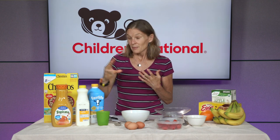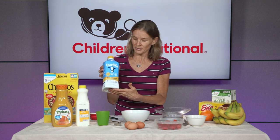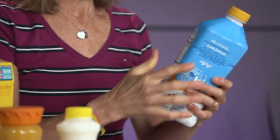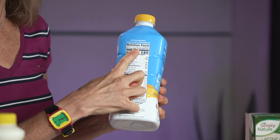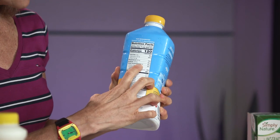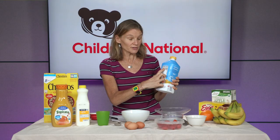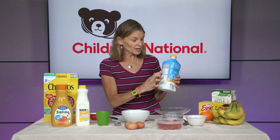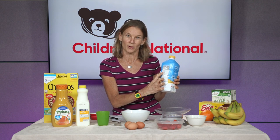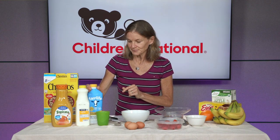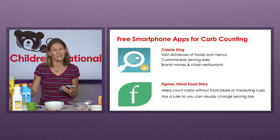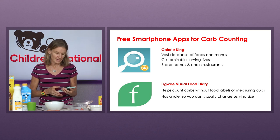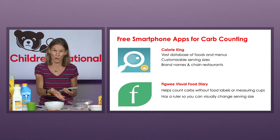There are three ways to figure out carbs. First, many foods have food labels. This milk — a different brand called Fairlife — has a label with two things to keep an eye on: the serving size, which is one cup, and the total carbohydrates, which is six grams. So if I have one cup of this milk, I'll add six grams of carbohydrate to my carb count. The second way is using an app or a book called Calorie King. I have it on my phone and can look up any food. Calorie King is especially handy for fresh foods that don't have labels, like these strawberries — one cup of whole strawberries has 11 grams of carbohydrates.